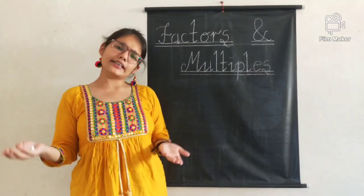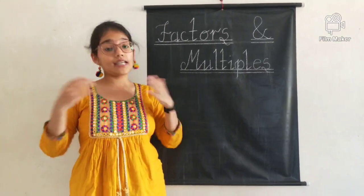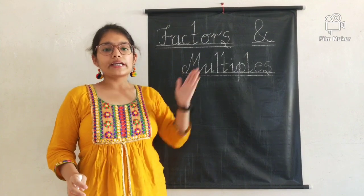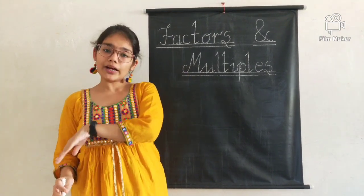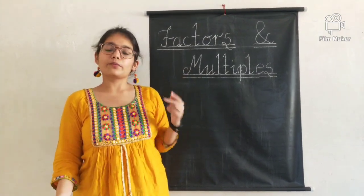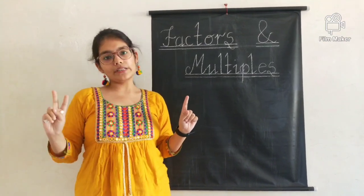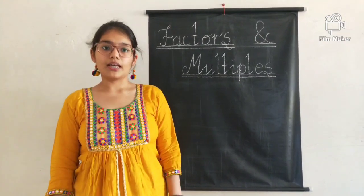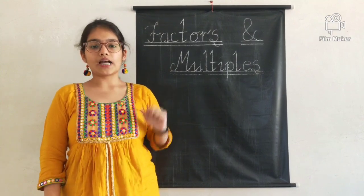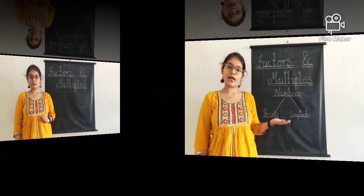The numbers by which 30 can be divided exactly are the factors of 30. For example, 2 can only be written as 1 into 2 or 2 into 1. So we can say that 2 has only 2 factors: 1 and 2 itself.